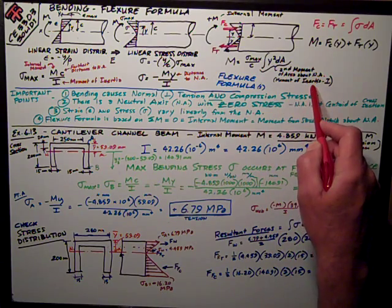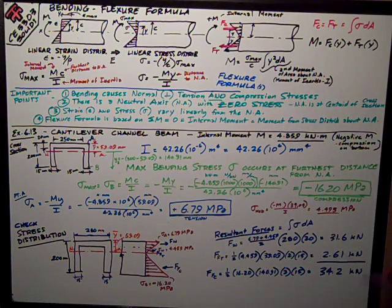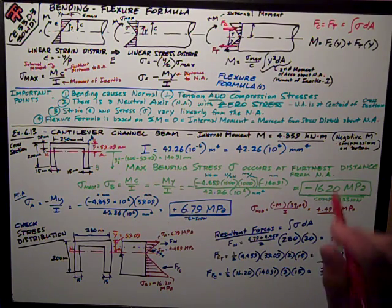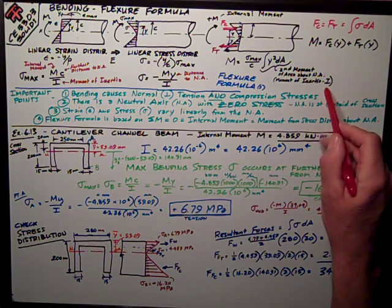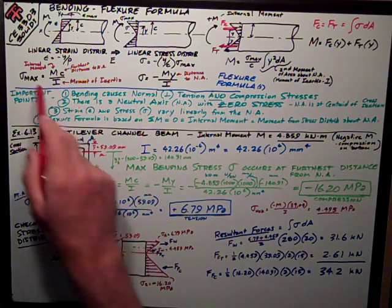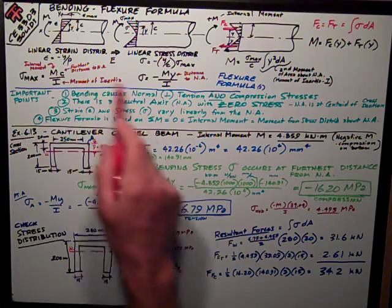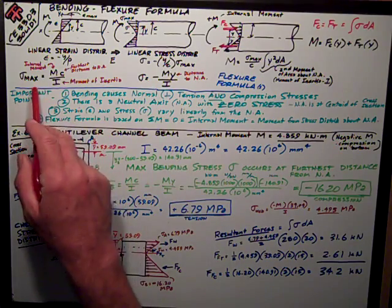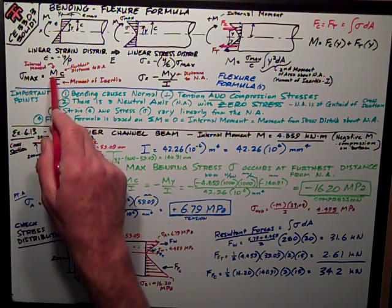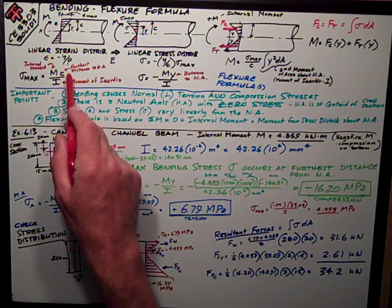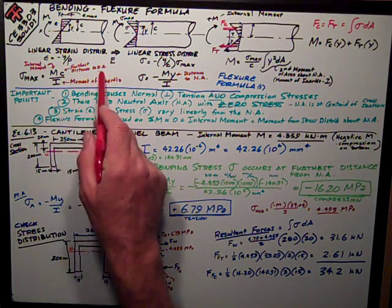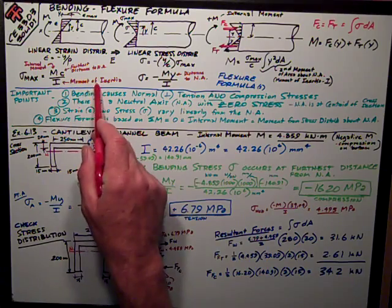We call that the moment of inertia, sort of the resistance to rotation about its neutral axis or its centroidal axis. The letter we use for that is I. So, we can rewrite the maximum stress formula and the stress at any point in this manner. The maximum stress is the internal moment times that c furthest distance to the neutral axis divided by the moment of inertia.